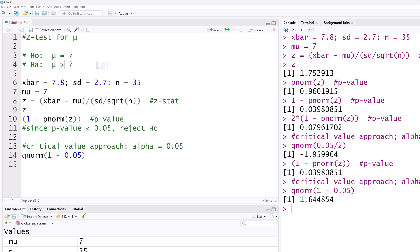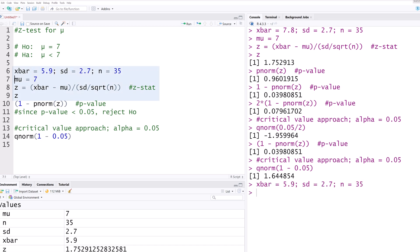Finally, suppose this were a left or lower tailed test, where we are testing if the population mean is less than 7. Suppose the sample mean X bar is now 5.9. I'm going to rerun line 6 to 9. You can see that we now have a Z value of negative 2.41.